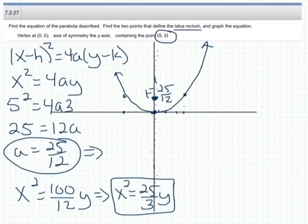So the latus rectum is the line that passes through the focus perpendicular to the axis of symmetry, and we need to figure out the two points on the parabola on the latus rectum.